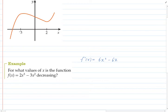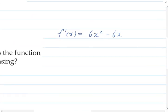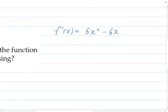And that's going to happen where our gradient function dips below zero. So really I want to be solving this equation for where 6x² - 6x is less than zero. And that's the function I'm going to solve.